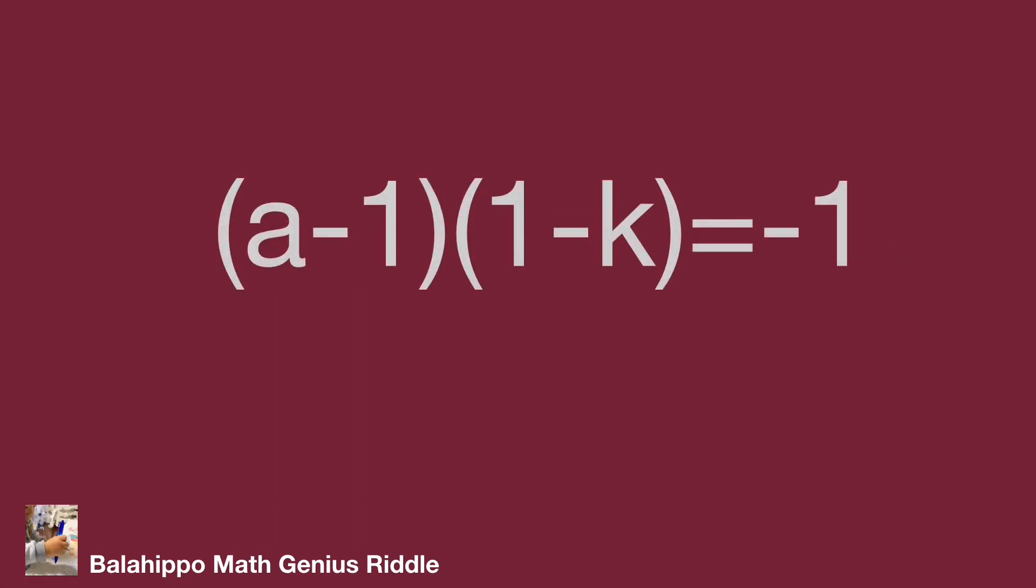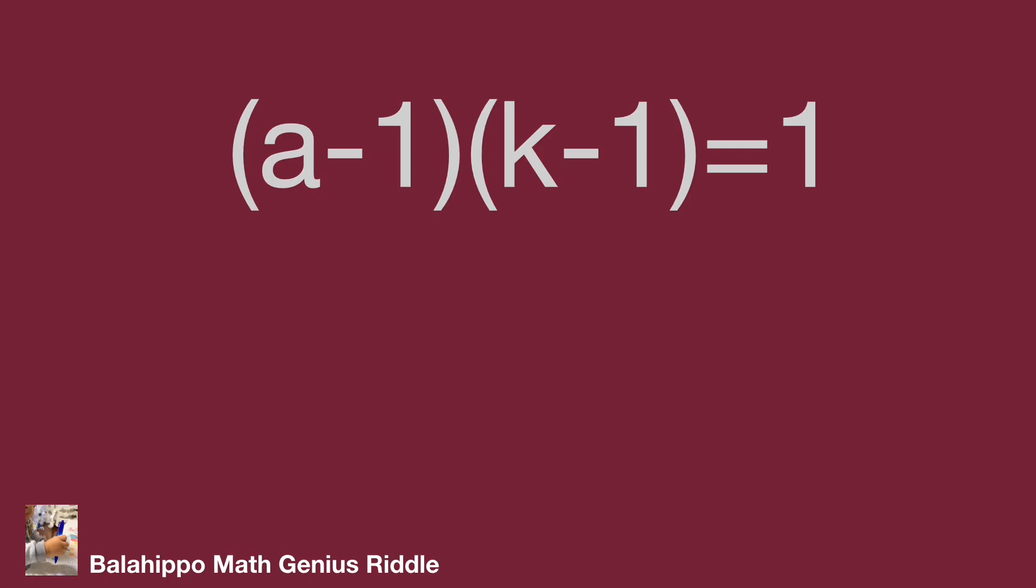Multiply by negative 1 on both sides of the equation. This becomes (A minus 1) multiplied by (K minus 1) equals 1.